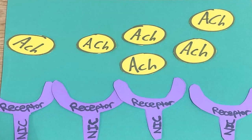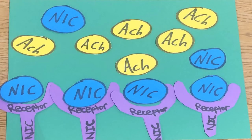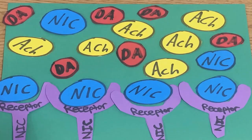Here we see nicotinic acetylcholine receptors receiving the neurotransmitter acetylcholine as it travels through the synapse from the previous neuron. Acetylcholine binds to the nicotinic receptors to produce dopamine. Once nicotine is introduced, it binds with these same nicotinic acetylcholine receptors. The drug works to excite the release of dopamine in the brain. This dopamine release decreases rapidly once nicotine exits the brain, thus creating its addicting effect.